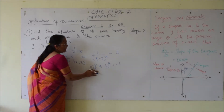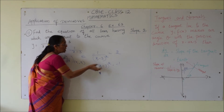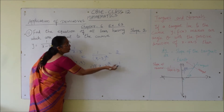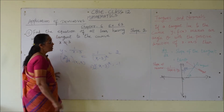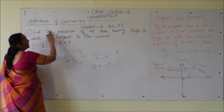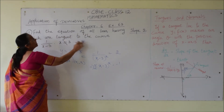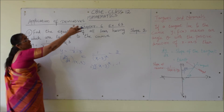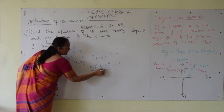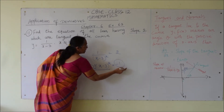When we observe this, (x1 minus 3) whole square is a perfect square, so it is always positive, and 2 is always positive. Therefore the left-hand side is positive, but the right-hand side is negative 1. There is no meaning in getting negative 1 here, so there is no tangent at all.